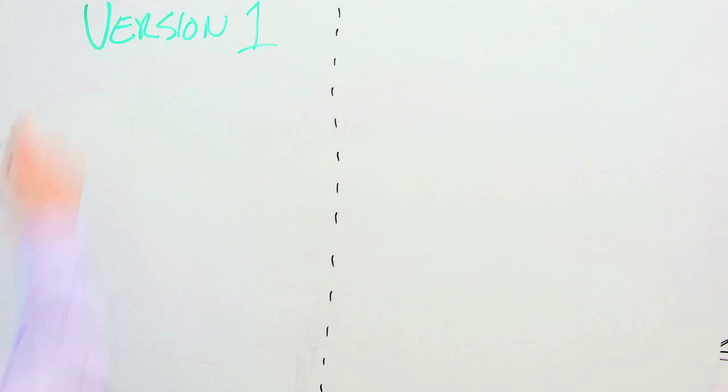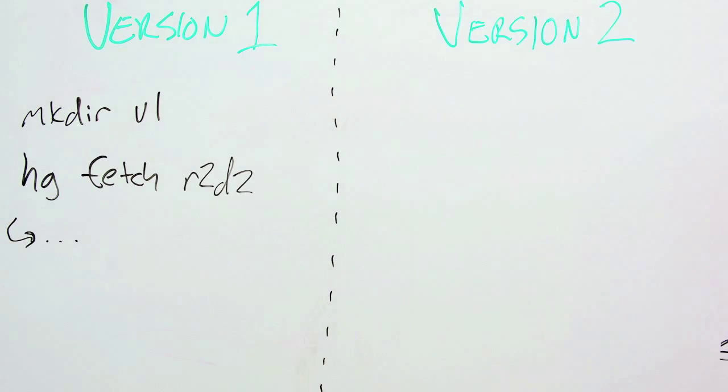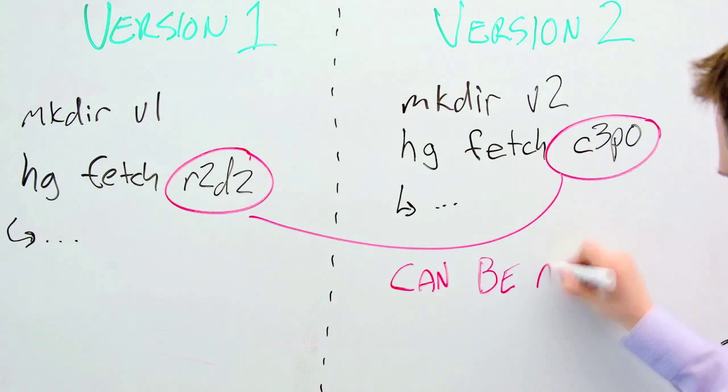We start by considering two versions of a system, one before and one after a change, although any two arbitrary versions can be chosen.